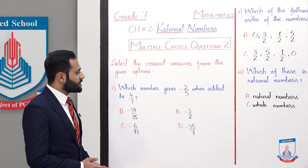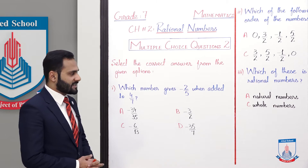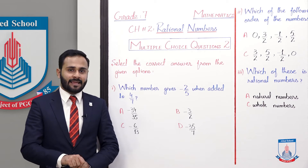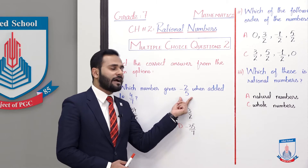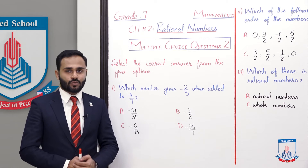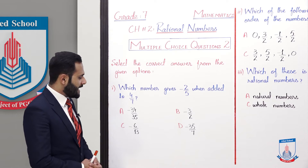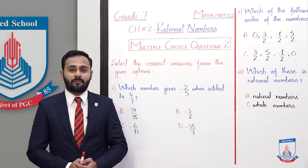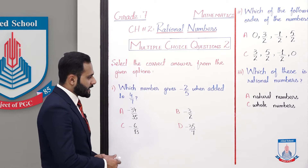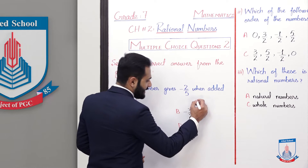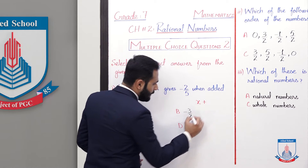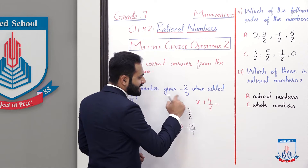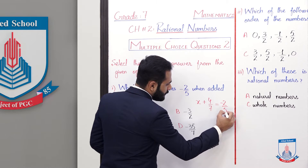The first MCQ is: which number gives minus 2 by 5 when added to 4 by 7? Aap konsa number 4 by 7 mein add keringe to aapka answer minus 2 by 5 aayega. Wo number aapne answer se choose karna hai. Options are: A) minus 34 by 35, B) minus 3 by 2, C) minus 6 by 13, and D) minus 35 by 7. Let's suppose that the number is x, and we will add it to 4 by 7, so our answer should be minus 2 by 5.